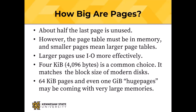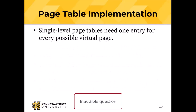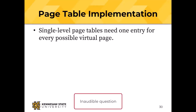Big pages mean smaller page tables, but they also mean more disk I/O. Student question: wouldn't bigger pages mean you need more offset bits? Yes — you need enough offset bits to index any location in that page. But that division between the page number and the offset is an artifact of how the memory management unit works: how many bits do I need for the page table number, and the rest are offset bits. So it's not quite as big a trade-off as you might think.